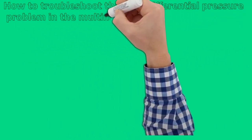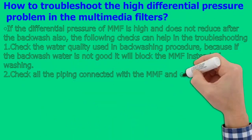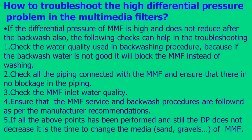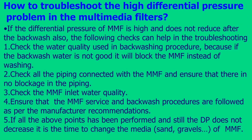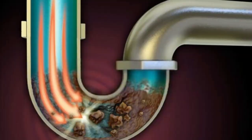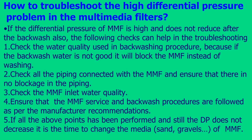How to troubleshoot the high differential pressure problem in multimedia filters. If the differential pressure of MMF is high and does not reduce after backwash, the following checks can help in troubleshooting: Check the water quality used in backwashing, because if the backwash water is not good it will block the MMF instead of washing. Check all piping connected with the MMF and ensure there is no blockage. Check the MMF inlet water quality. Ensure that MMF service and backwash procedures are followed as per manufacturer recommendations. If all the above points have been performed and the differential pressure still does not decrease, it is time to change the media — sand and gravels — of the MMF.